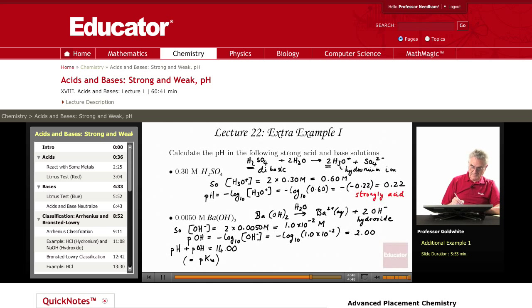So, the pH in this solution equals 14.00 minus the pOH equals 12.00. Strongly basic, as we would expect.